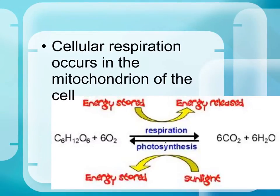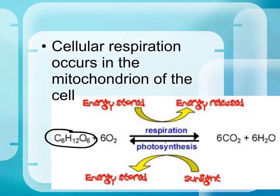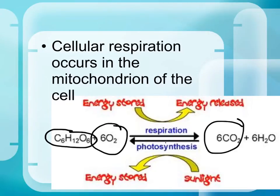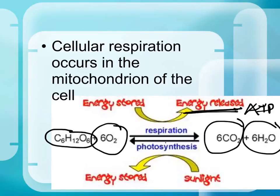Recalling biology, cellular respiration occurs in the mitochondrion of the cell, and that is what oxygen is required for. The equation shows C6H12O6 — glucose, or food — combined with oxygen provided by the respiratory system, producing carbon dioxide, water, and most importantly, energy in the form of ATP. The whole purpose of needing oxygen is to release the energy from the food we eat.